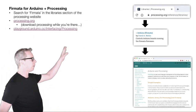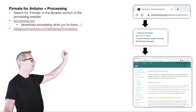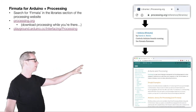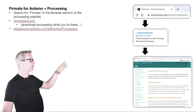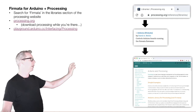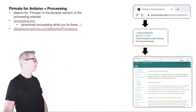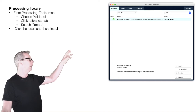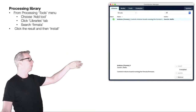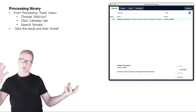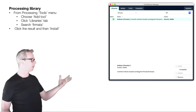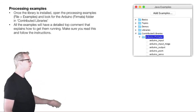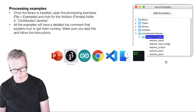In Processing, once you've got it open, click on the Tools menu, then Add Tool. Click on the Libraries tab and search for Firmata. You should see Arduino Firmata — it controls boards running the Firmata software. If you haven't installed it yet, just click Install. We went to the libraries page in Processing and searched for Firmata because we've put Firmata on the Arduino, and we also need to put Firmata on the computer so they know how to talk together.